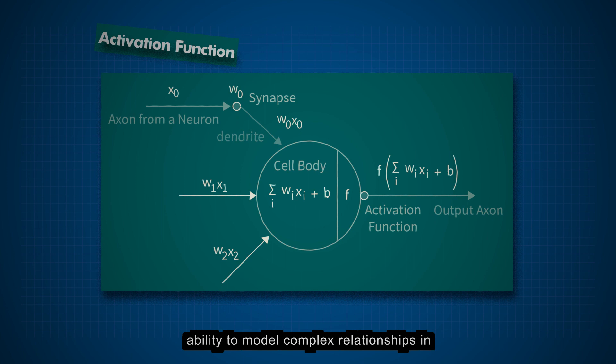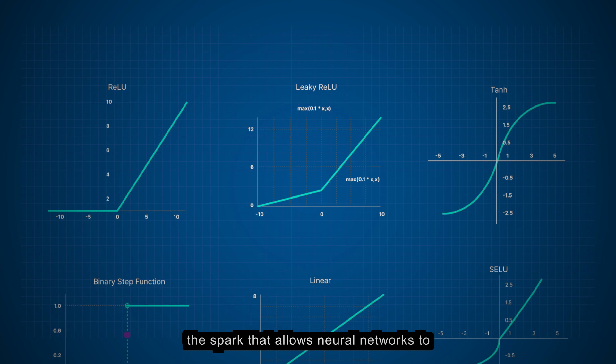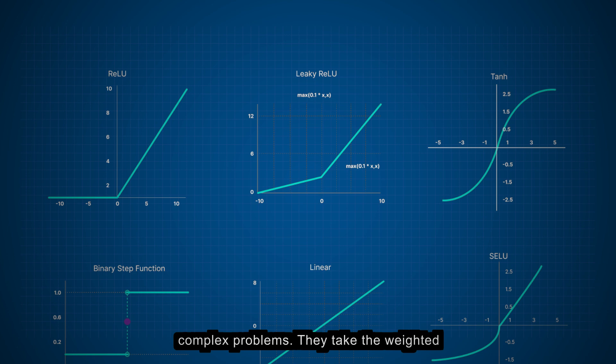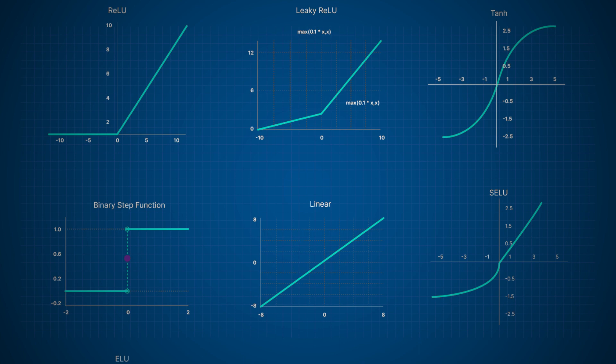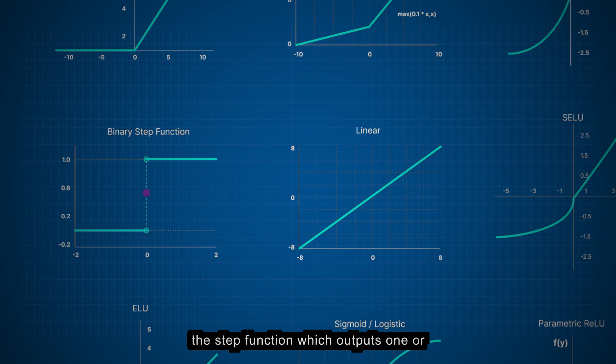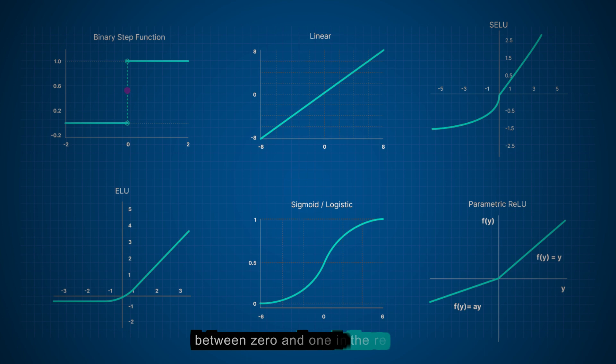Activation functions introduce the spark that allows neural networks to learn and adapt to different patterns, making them powerful tools for solving complex problems. They take the weighted sum of inputs and apply a transformation, resulting in an output that can vary depending on the function's properties. Some popular activation functions include the step function, which outputs 1 or 0 based on a threshold, the sigmoid function, which squashes the output between 0 and 1, and the rectified linear unit, ReLU, which outputs the input if positive and 0 otherwise.